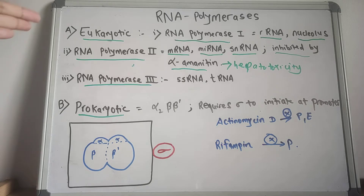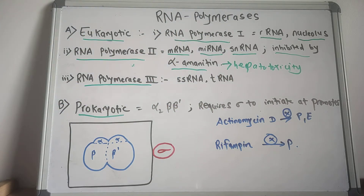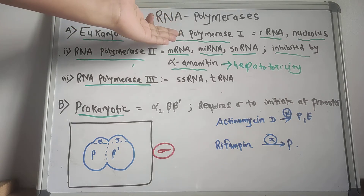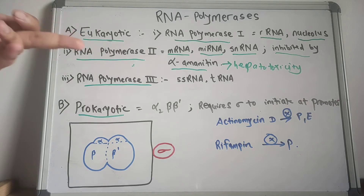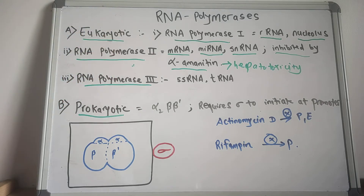RNA polymerase 3 makes 5S RNA and the tRNA (transfer RNA). So these are the three RNA polymerases — RNA polymerase 1, 2, and 3 — found in eukaryotic organisms.